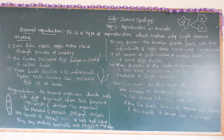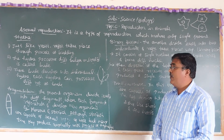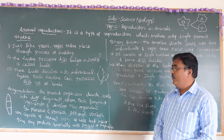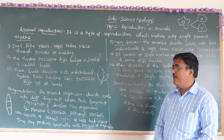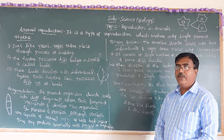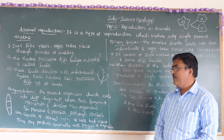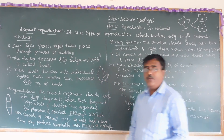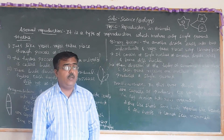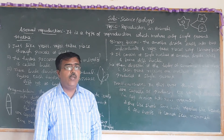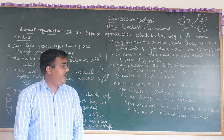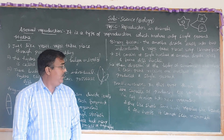Recap: In Hydra and yeast, reproduction takes place through budding — buds form on the body and develop into new individuals. In lower animals like planaria and starfish, fragmentation occurs where the organism divides into fragments that regenerate. Binary fission is when a single organism divides into two nuclei and then two individuals. Parthenogenesis is when a female produces offspring without fertilization.